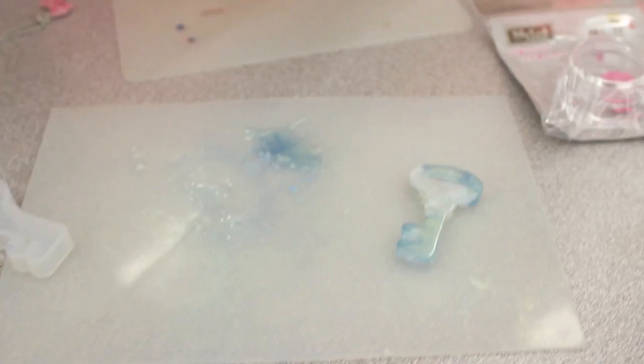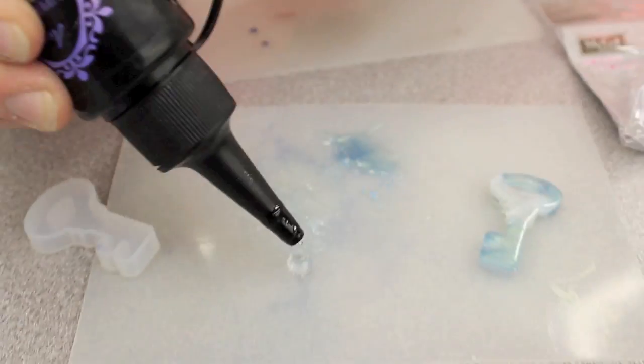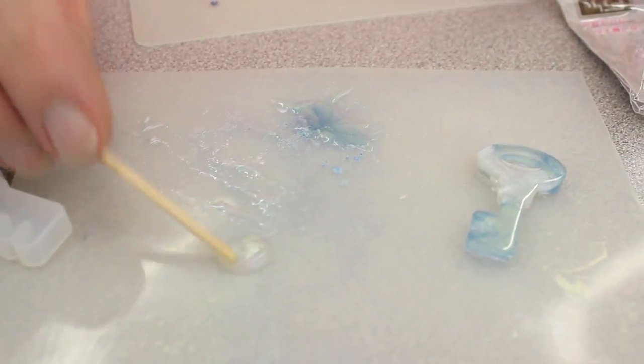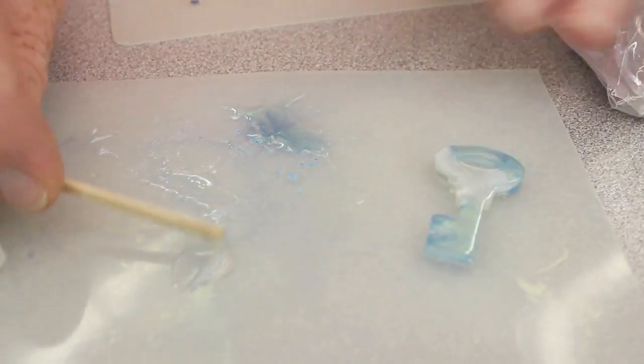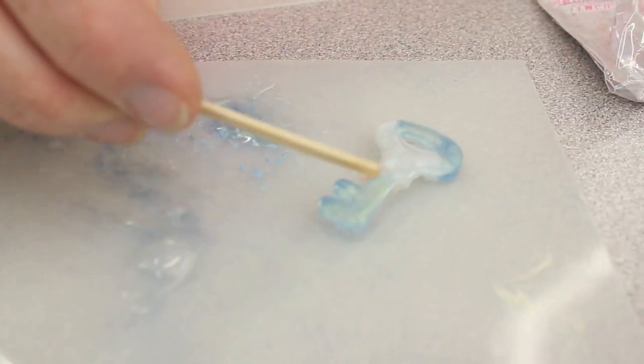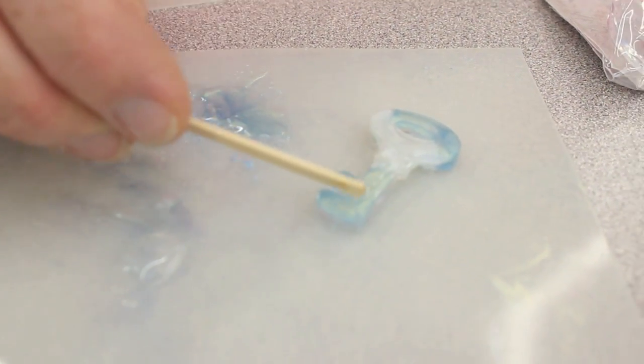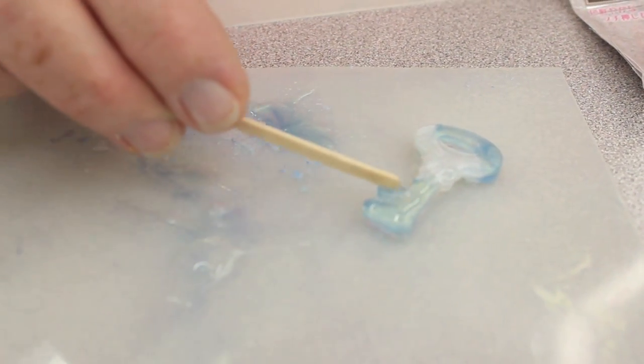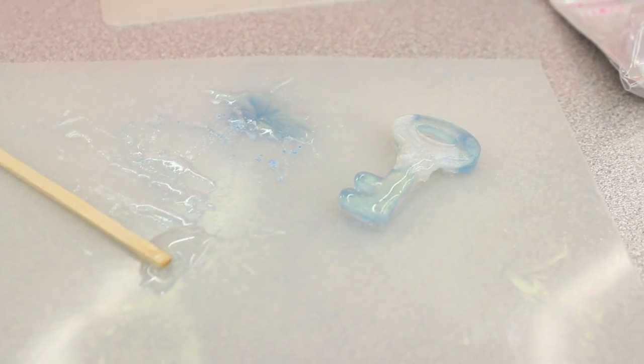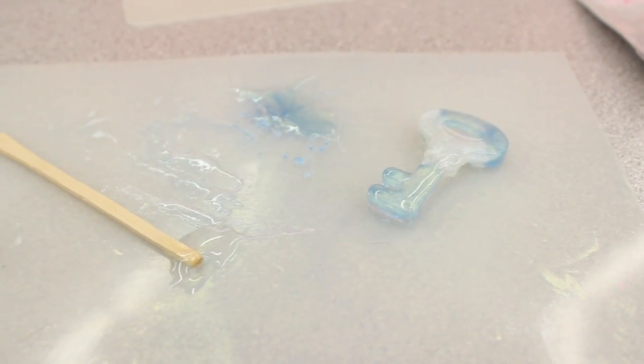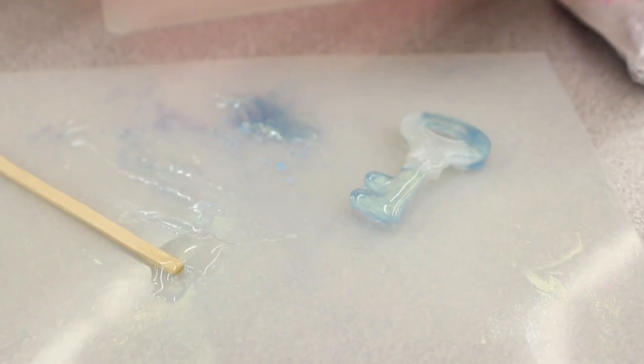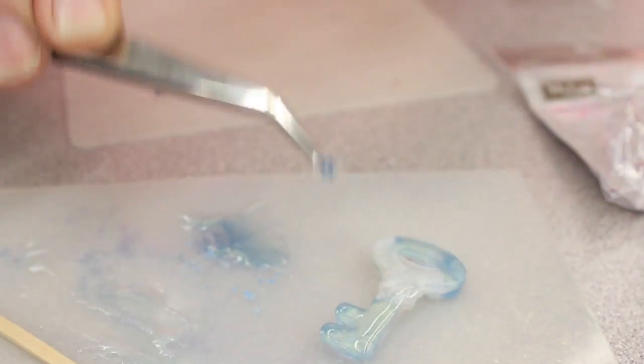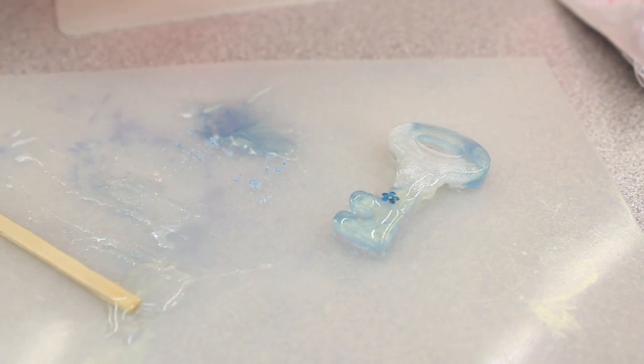I'm going to put a little bit of resin again on my silicone mat. Take my toothpick. And add the clear resin little by little on top. And I have cut out some of this clear film. Oh, it's so tiny. I'm using little tweezers. We can set in there.